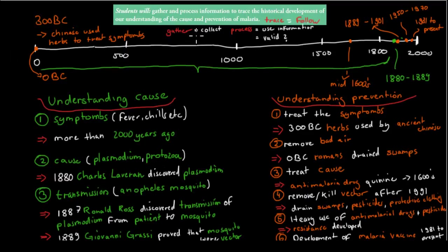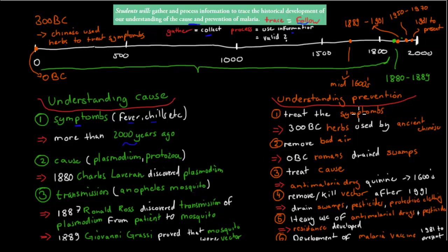The next dot point requires gathering, processing, and evaluating information to trace the development of our understanding of the cause and prevention of malaria. Early on, we only knew the symptoms — fever and chills — for more than 3,000 years. We believed bad air was the cause, so we removed swamps to eliminate it, which incidentally also removed mosquitoes but wasn't actually about bad air. Prevention was limited to treating symptoms with herbs, as used by the Chinese around 300 BCE.